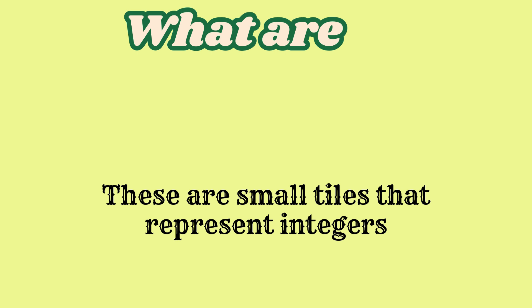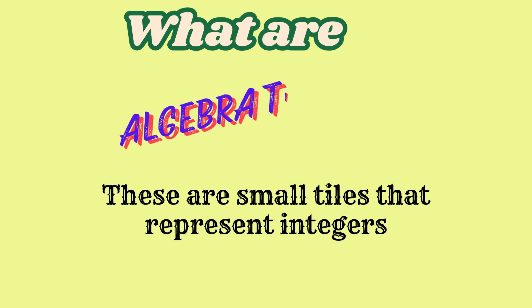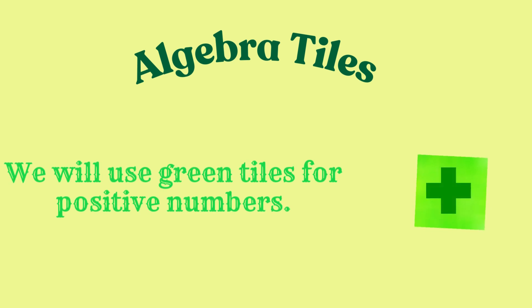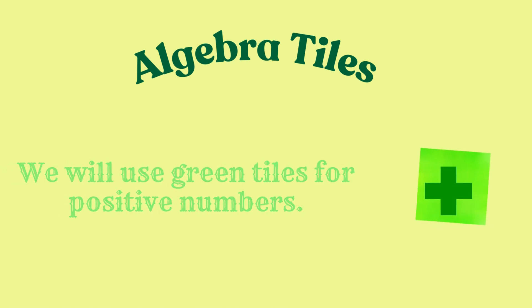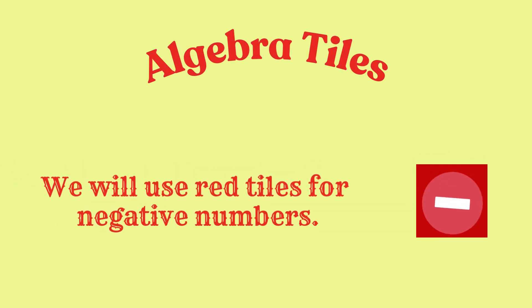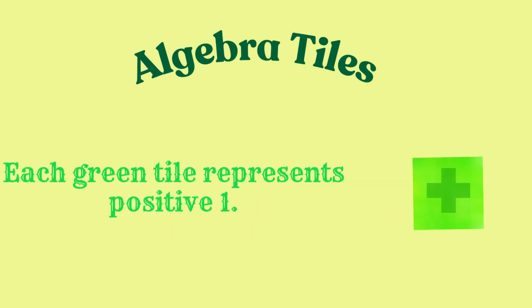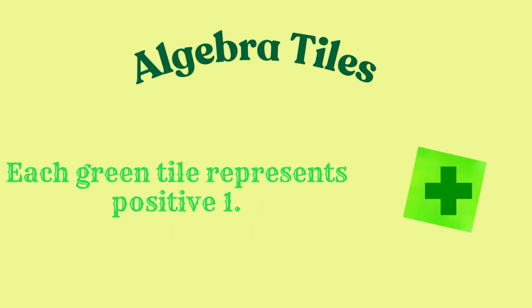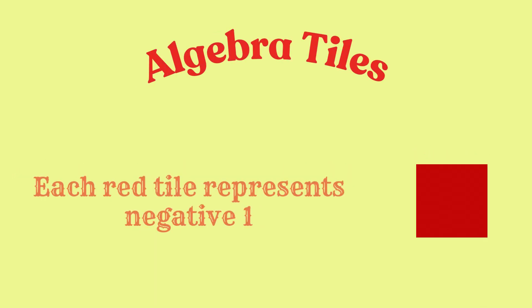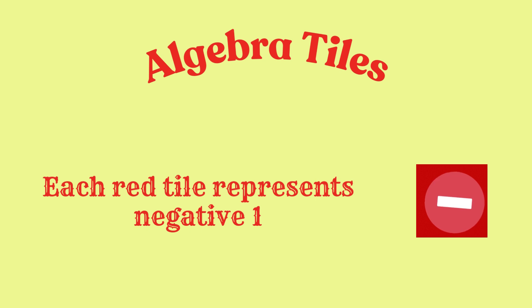Let's begin with adding integers with algebra tiles. What are algebra tiles? These are small tiles that represent integers. We'll use green tiles for positive numbers and red tiles for negative numbers. Each green tile represents positive 1 and each red tile represents negative 1.